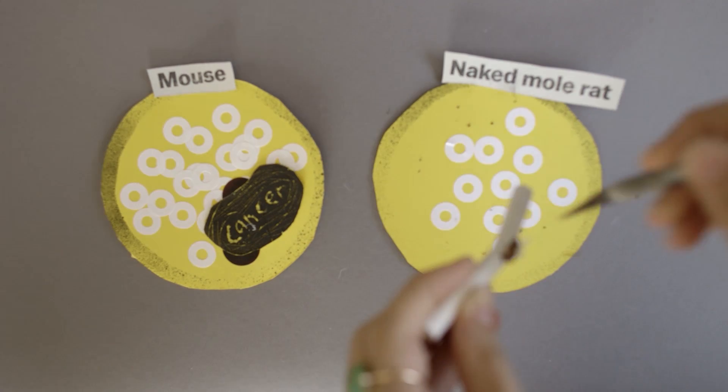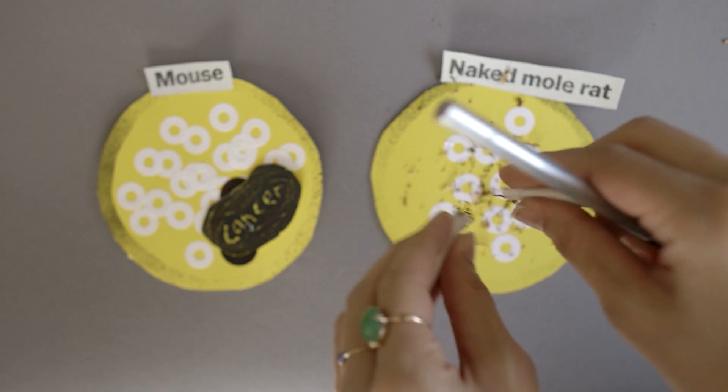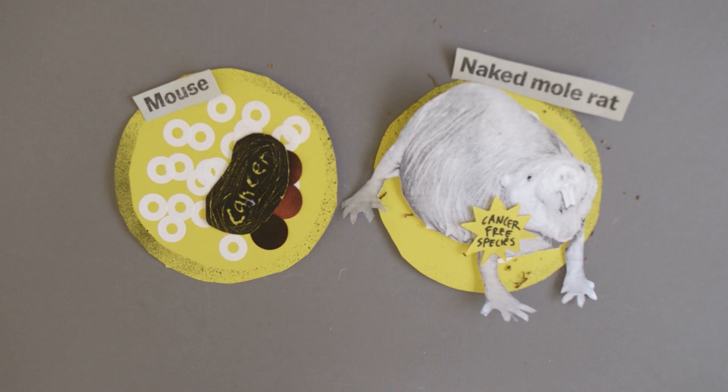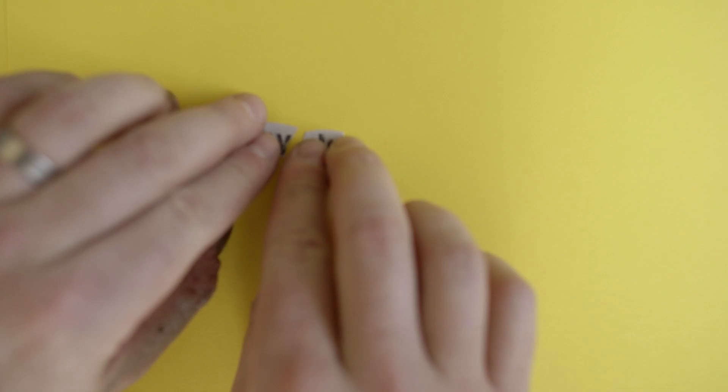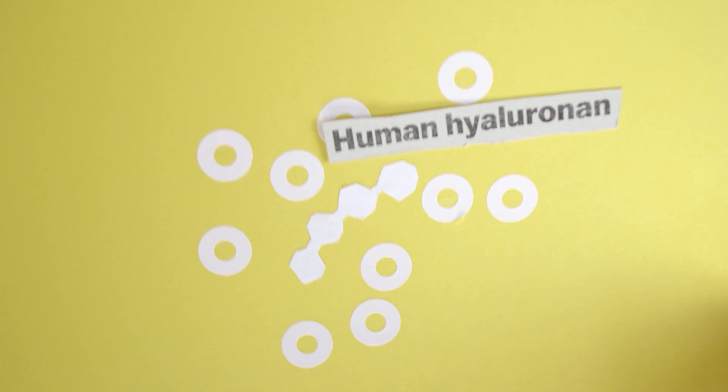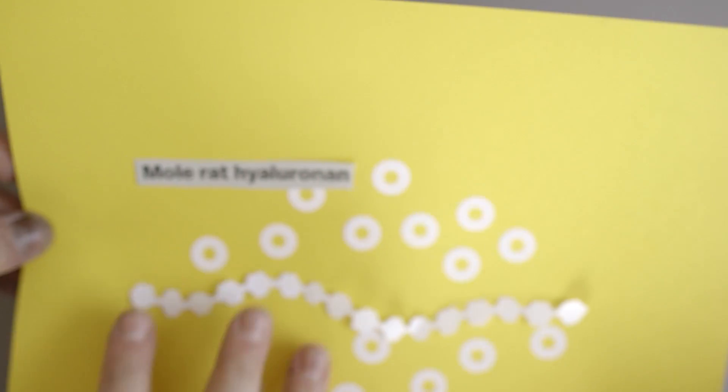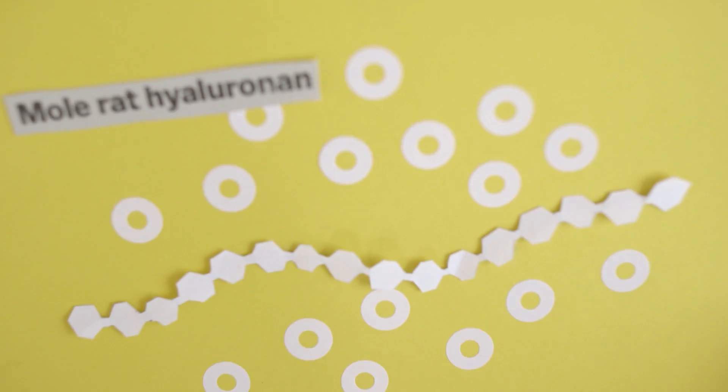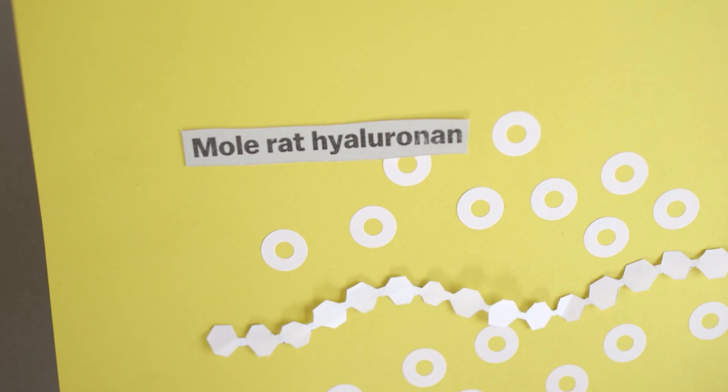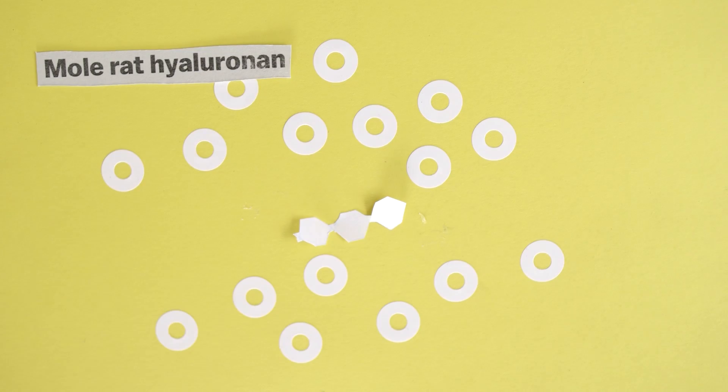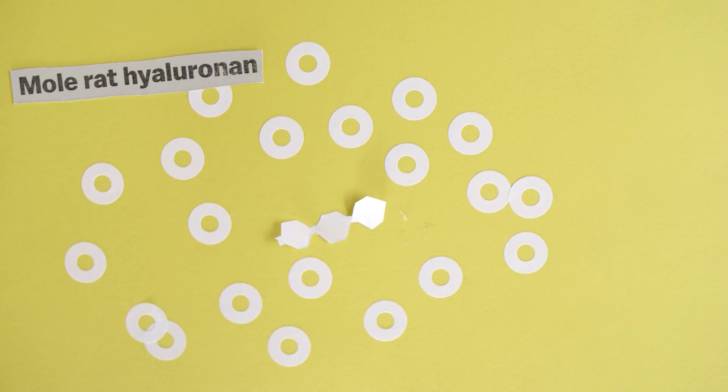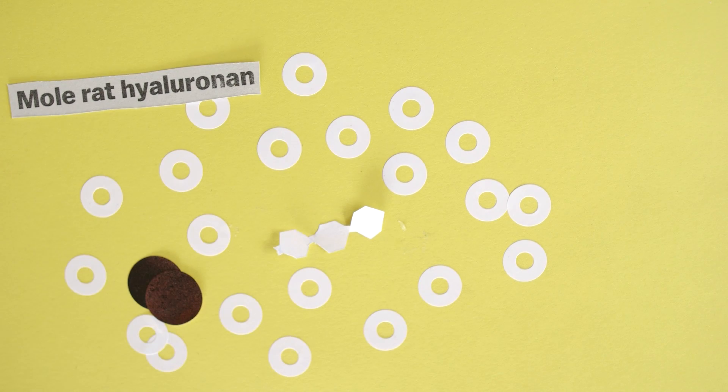And even when they dosed the naked mole rat cells with carcinogens, cancer-causing chemicals, there's no tumors there either. So one of the explanations for this, scientists have found, might be a chemical called hyaluronin that builds up in between the naked mole rat cells. So our cells also have hyaluronin, but the naked mole rat's version is five times longer than ours. But when the researchers use enzymes to cut the hyaluronin down to a shorter length, then all of a sudden they can see tumors forming in the naked mole rat cells.